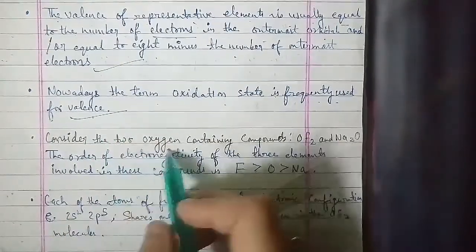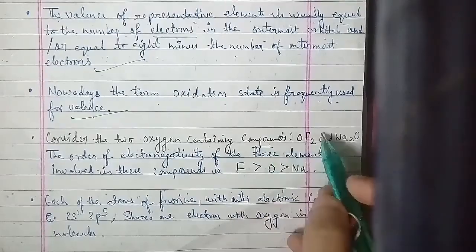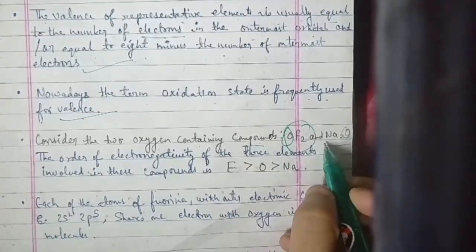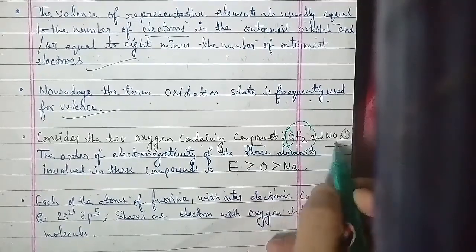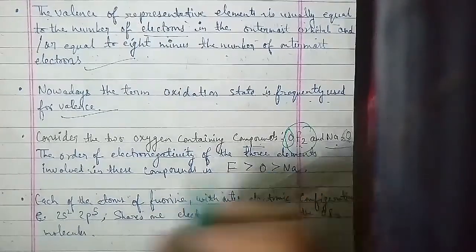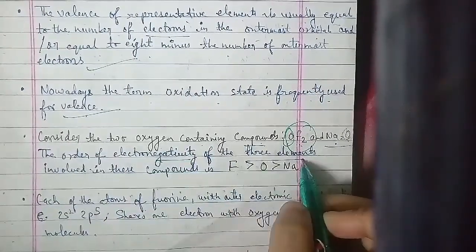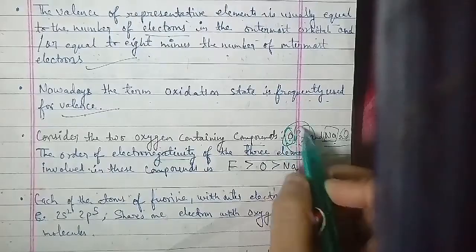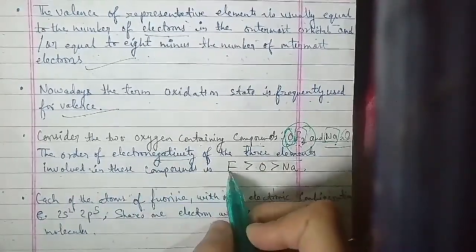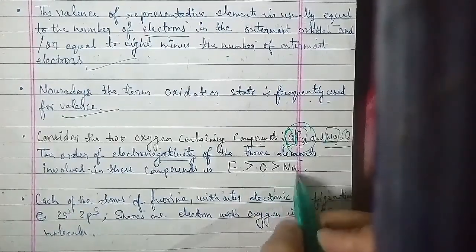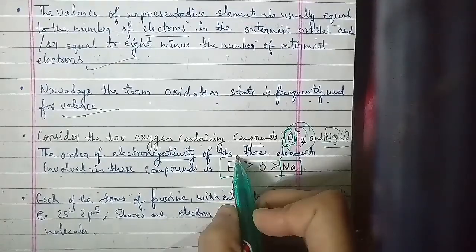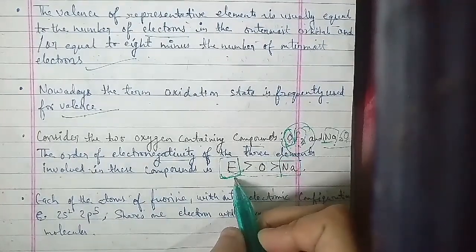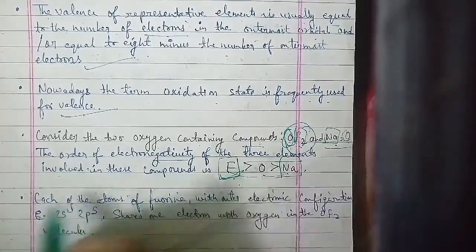We consider two oxygen-containing compounds: OF2 and Na2O. In OF2 and Na2O, we are dealing with the elements fluorine, oxygen, and sodium. The order of electronegativity among these three elements in the compound is: fluorine is greater than oxygen, and oxygen is greater than sodium. So fluorine has the highest electronegativity among the three, then oxygen, then sodium.